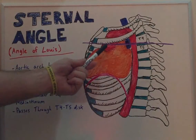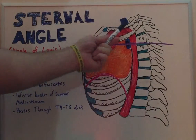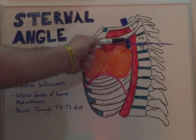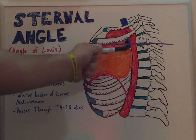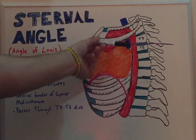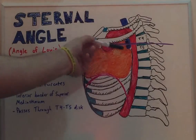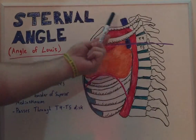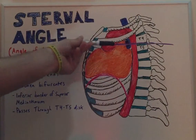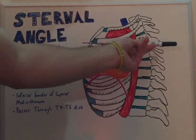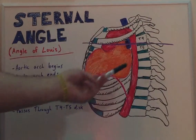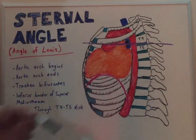Here we have the beginning and the end of the aortic arch, the bifurcation of our trachea here in blue, and the end of the inferior border of the superior mediastinum, which would be this cavity right here. All of these structures are at the level of T4 and T5 vertebrae, as we can see right here.